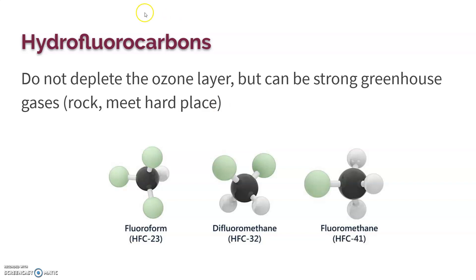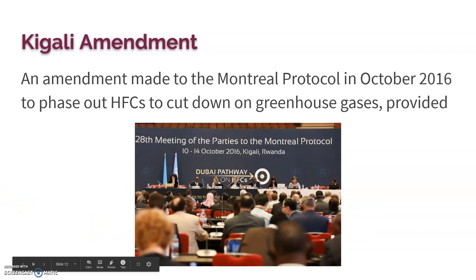The major substance we switched to to get away from CFCs and HCFCs are called hydrofluorocarbons (HFCs). They do not deplete the ozone layer. However, we found that they're strong greenhouse gases — just one molecule of these hydrofluorocarbons is capable of doing the same heat-trapping as thousands of carbon dioxide molecules. So now we've got a new problem: we don't want these either because we don't want global warming. In October 2016, countries met again and made an amendment to the Montreal Protocol called the Kigali Amendment to phase out HFCs so that we can cut down on greenhouse gases.